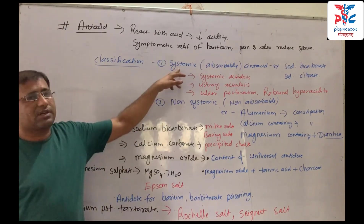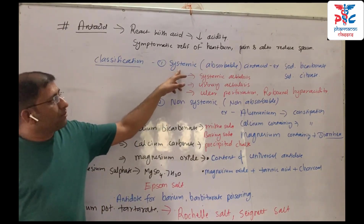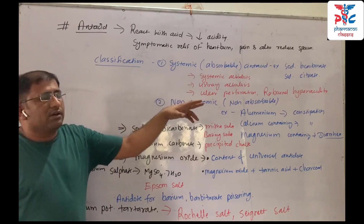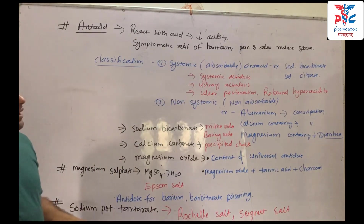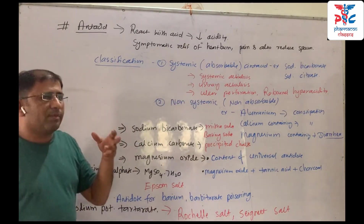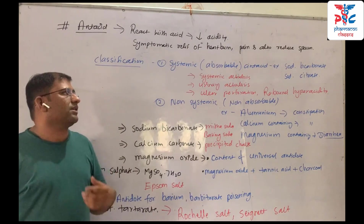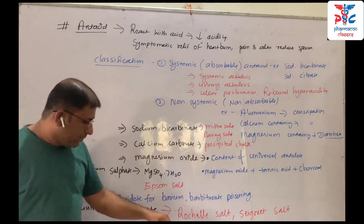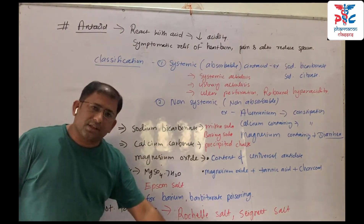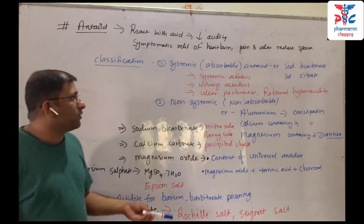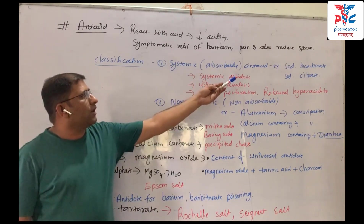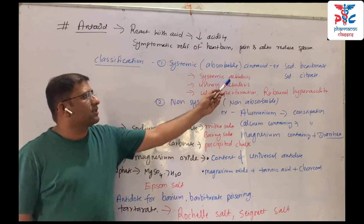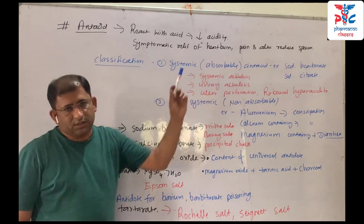Systemic means that the antacid can be absorbed in the stomach and will circulate into the systemic circulation. When it circulates into the system, it will increase the pH of the system.